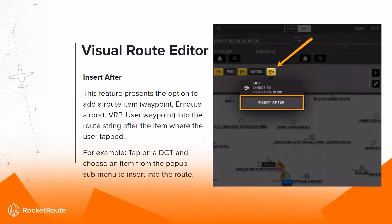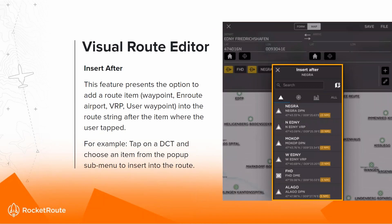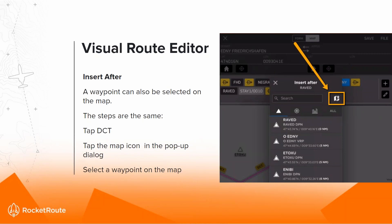You now have the ability to insert waypoints. Click on an item and a pop-up appears with the option to insert after — you can insert a waypoint, on-route airport, VRP, or user waypoint into the route string. You can add a waypoint from options based on distance from that initial waypoint, or by tapping the map icon and selecting the waypoint directly on the map.